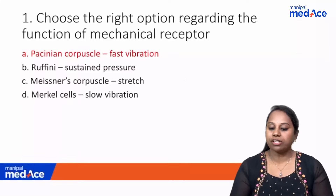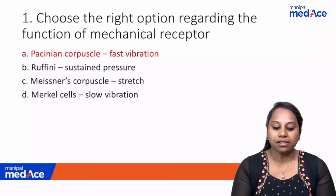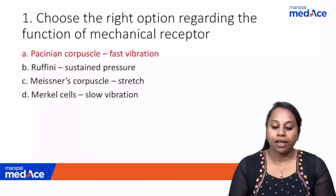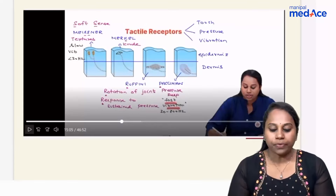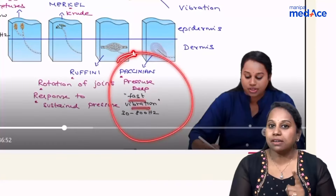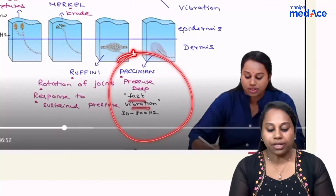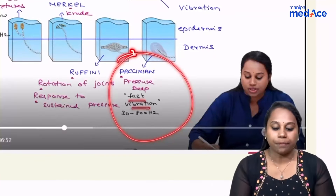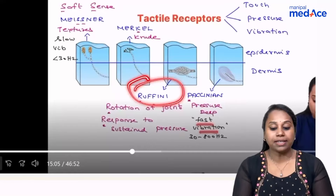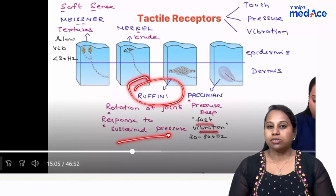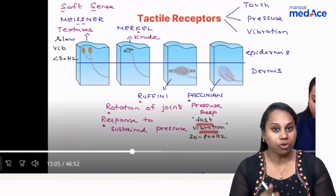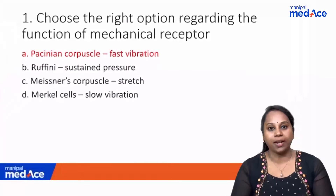Question 1: Choose the right option regarding the function of mechanical receptors. The answer is Pacinian corpuscle for fast vibration. The four tactile receptors are Meissner, Merkel, Ruffini, and Pacinian. Pacinian exclusively senses fast vibration at 330 to 800 Hz. Ruffini's most important function is rotation of joints, not sustained pressure. So the answer is option A: Pacinian corpuscle for fast vibration.